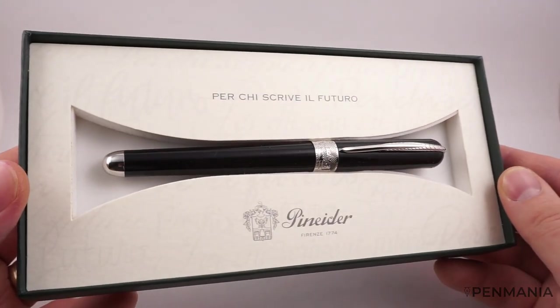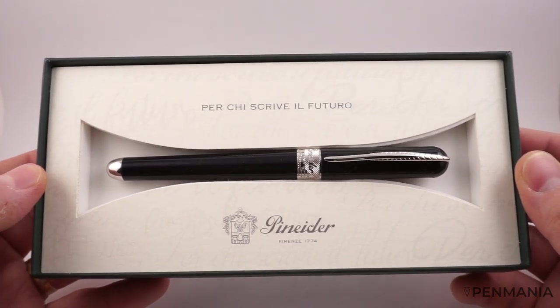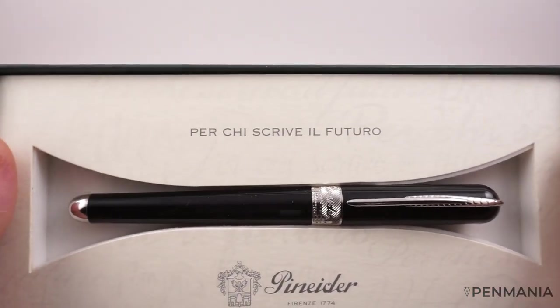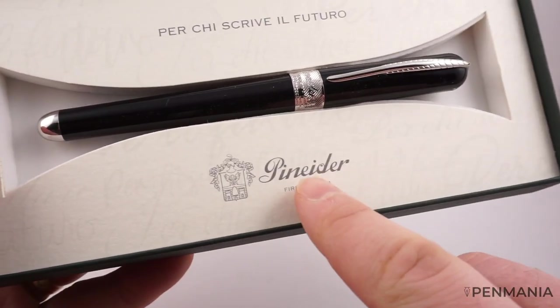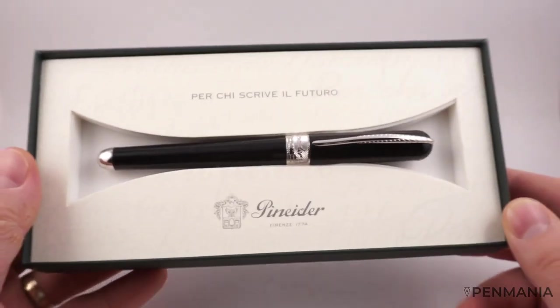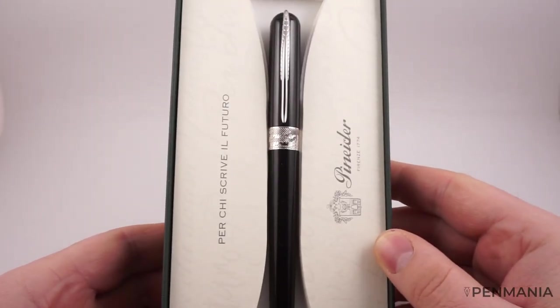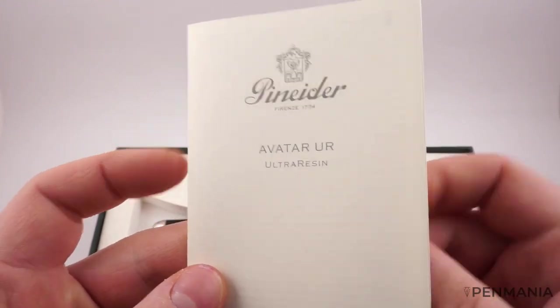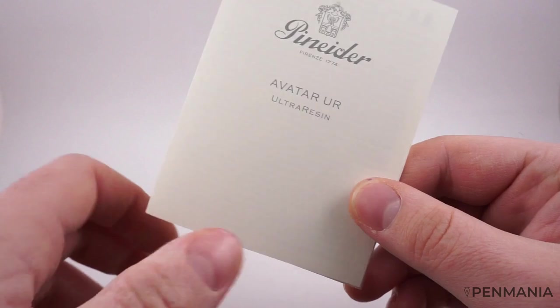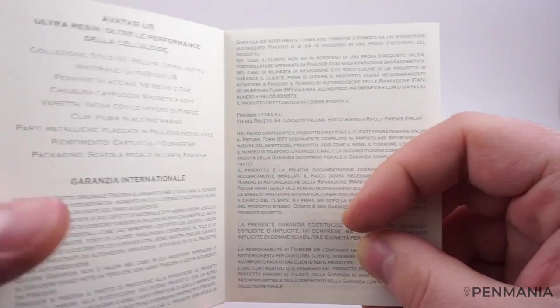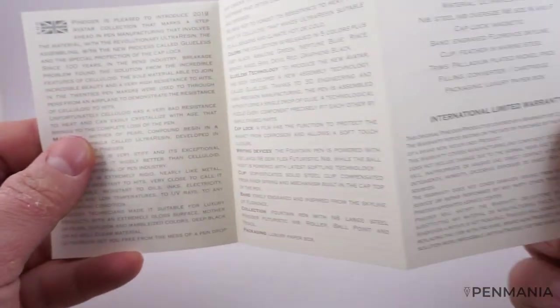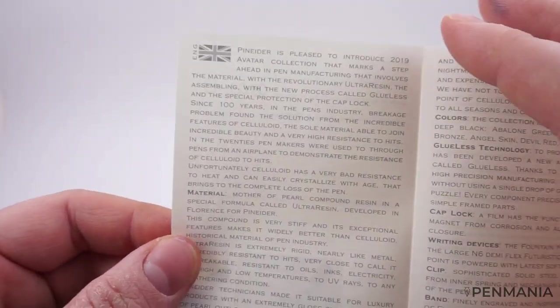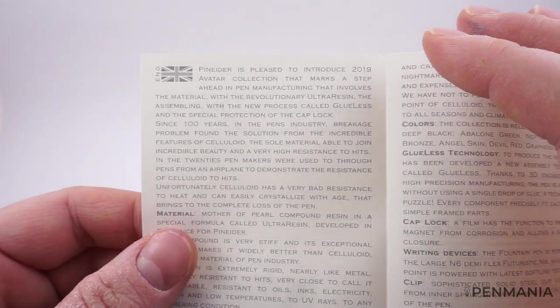This is how the fountain pen looks. 'For those who write the future,' this is written in Italian: 'Per chi scrive il futuro.' Again we have the Pinaider logo near the emblem, nice presentation. Here we have a small booklet. Let me get the pen out of the way to show you.